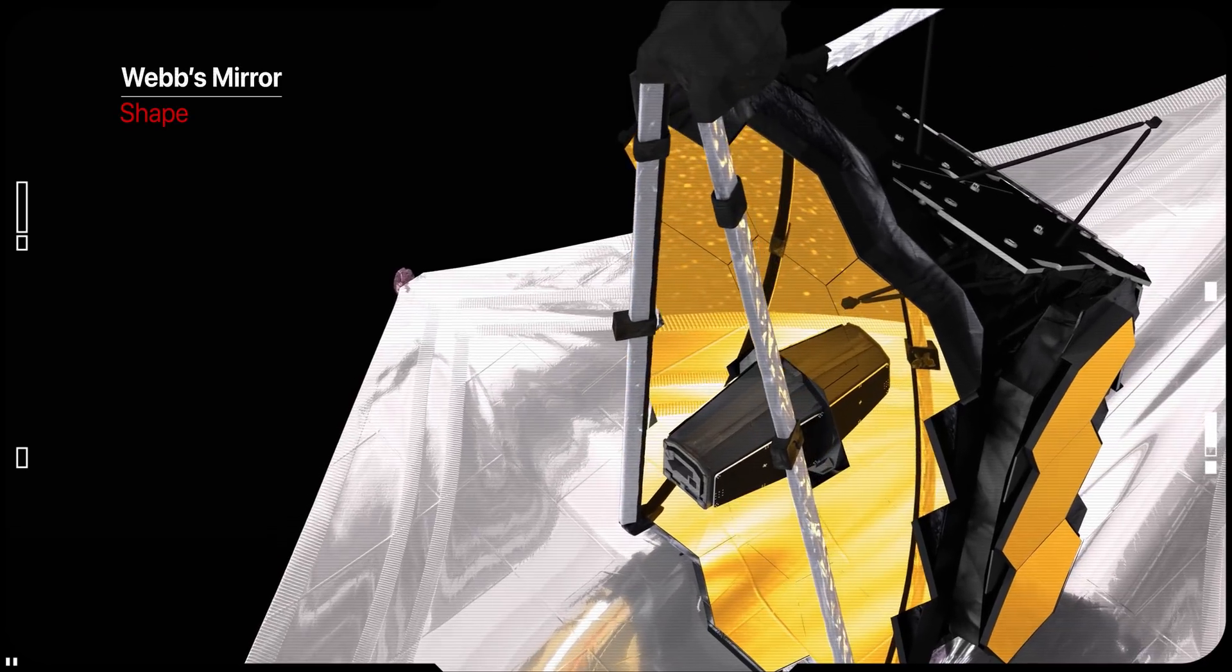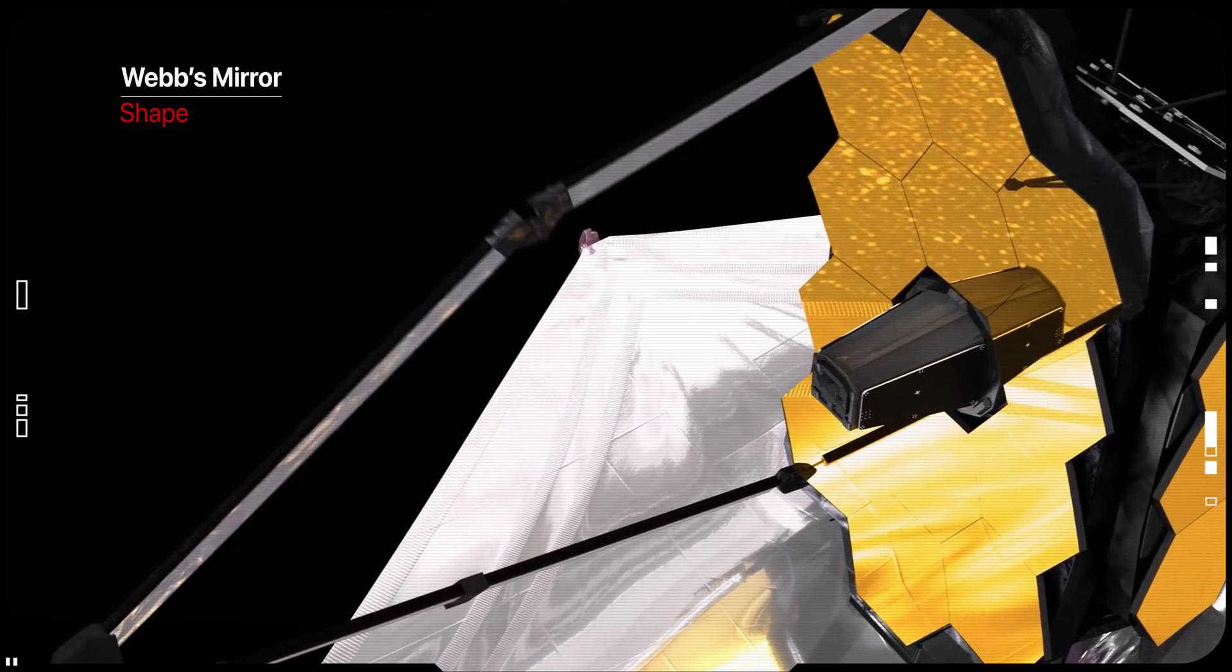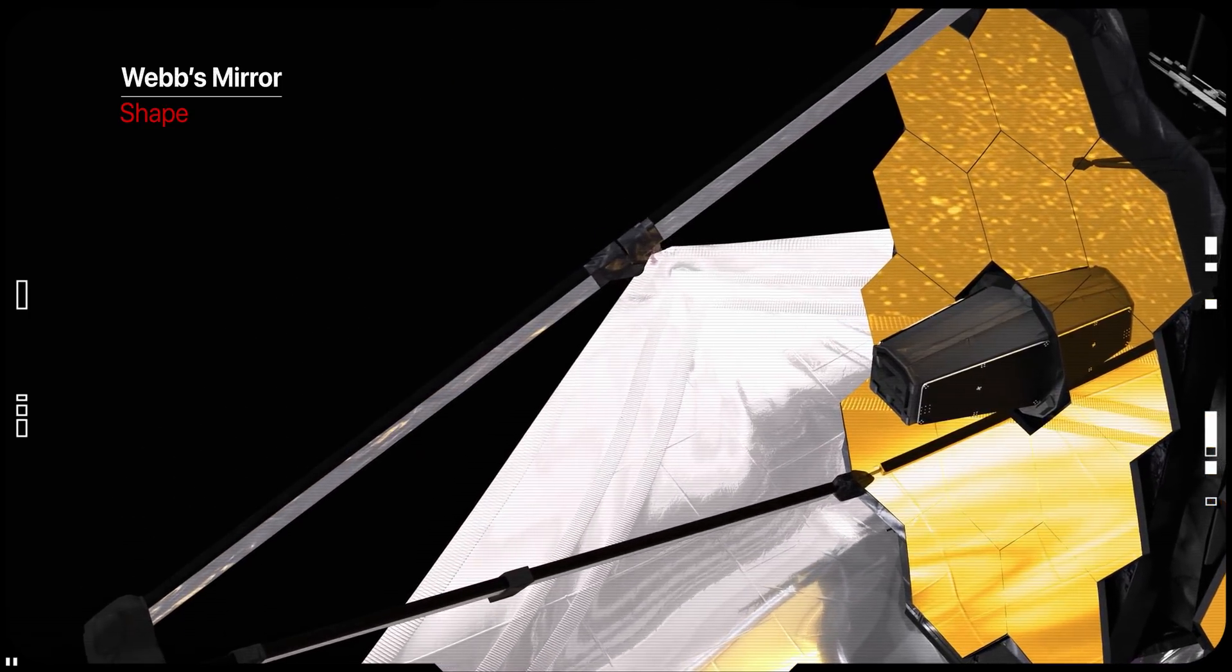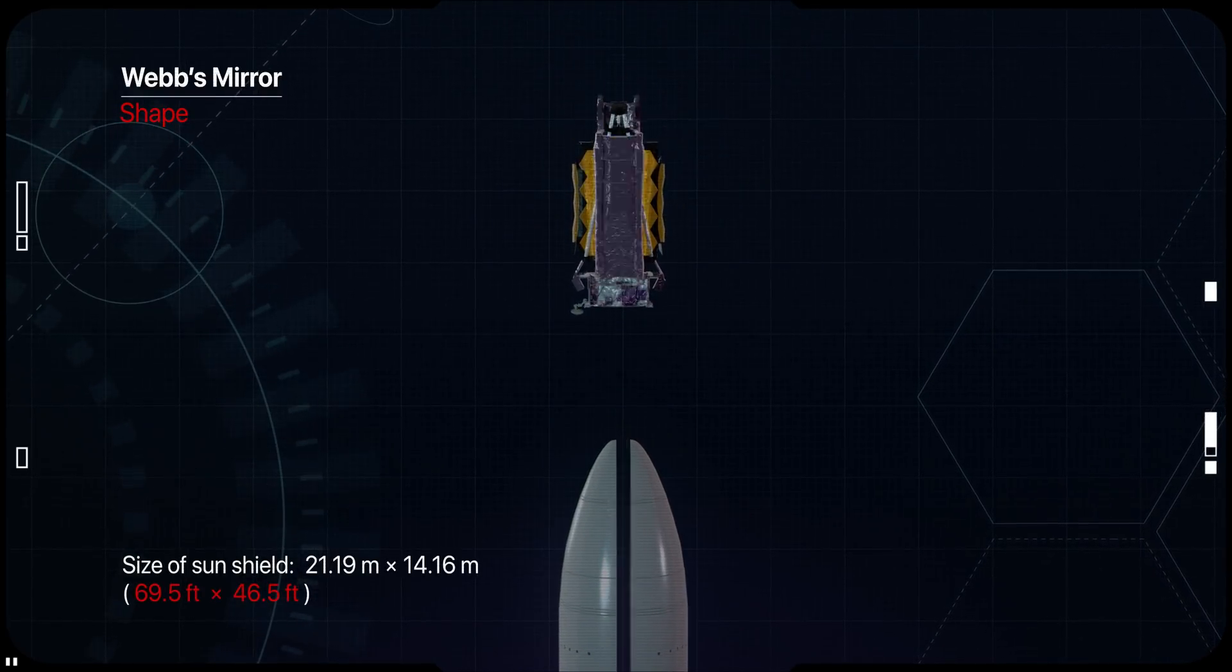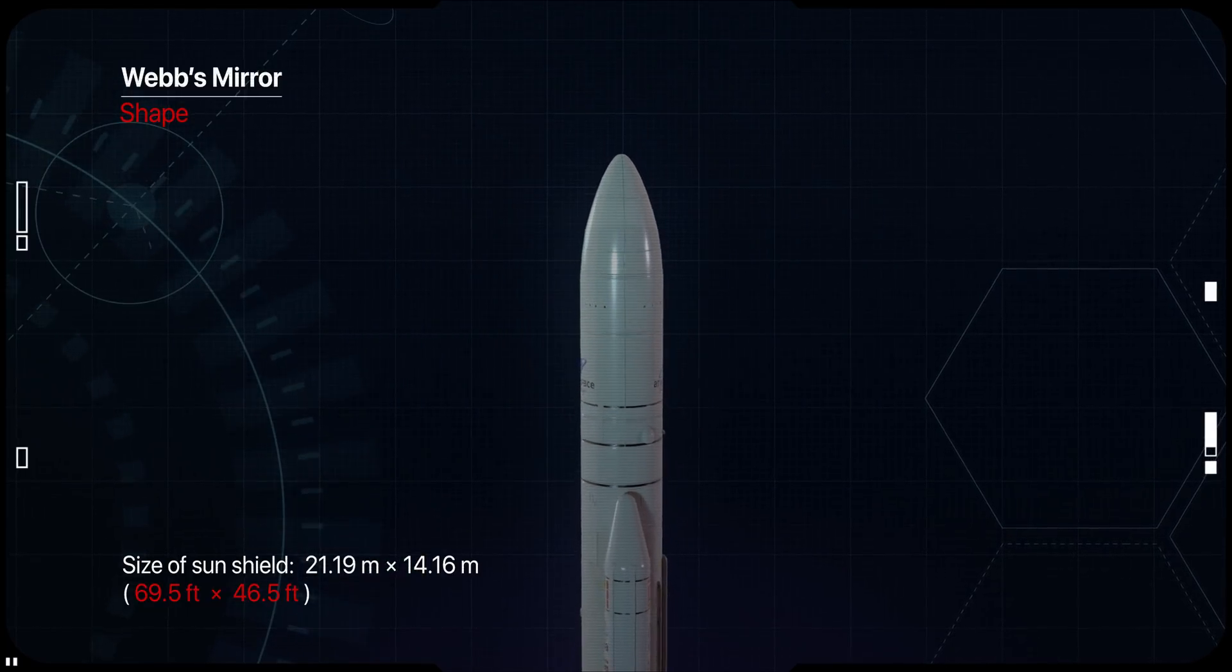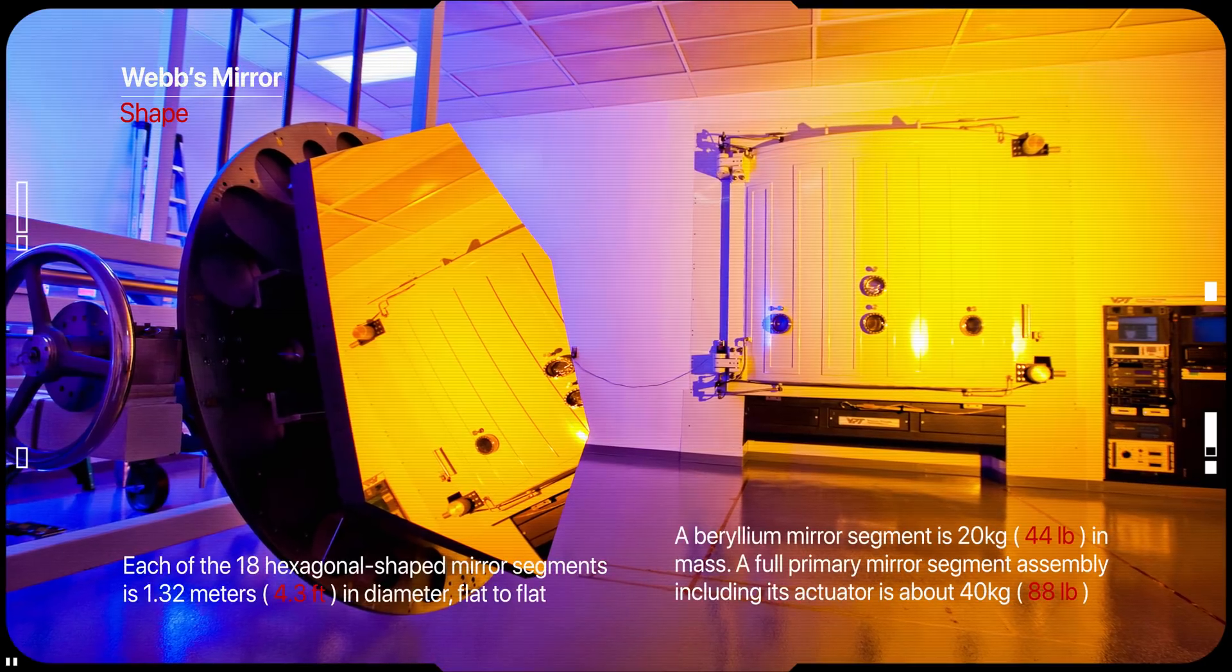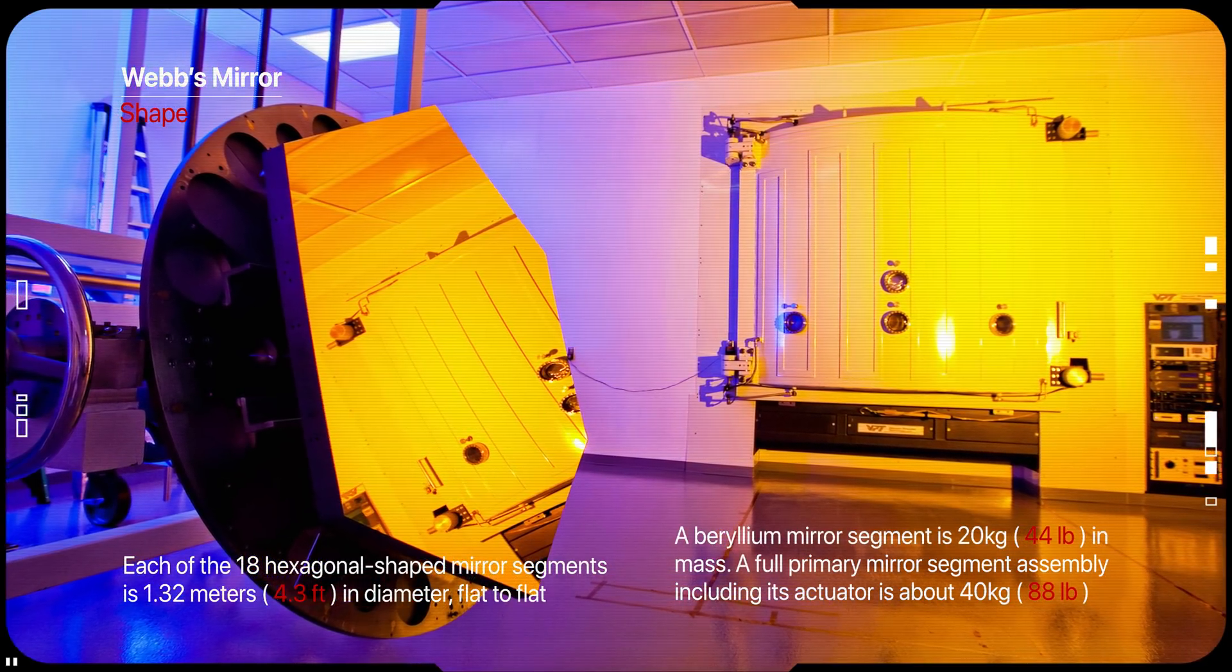The Webb's team also decided to build the mirror in segments on a structure which folds up like the leaves of a drop-leaf table, so that the telescope can fit into a rocket. Each of the 18 hexagonal shaped mirror segments is 1.32 meters in diameter, flat to flat.